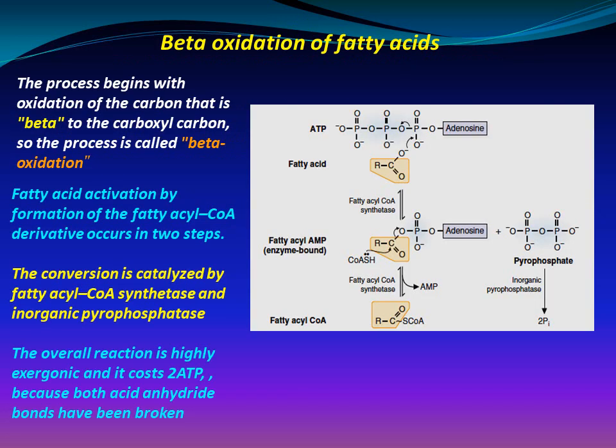Beta oxidation of fatty acids: the process begins with the oxidation of the carbon that is beta to the carboxyl carbon, hence it is called beta oxidation. Fatty acid activation occurs by formation of the fatty acyl-CoA derivative in two steps, catalyzed by fatty acyl-CoA synthetase and inorganic pyrophosphatase. The overall reaction is highly exergonic and costs two ATP because both acid-anhydride bonds have been broken.